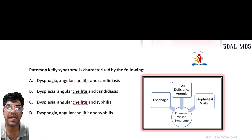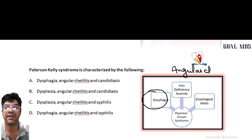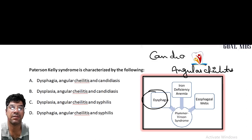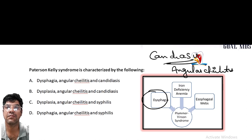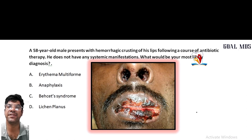Paterson-Kelly syndrome is also known as Plummer-Vinson syndrome. Its features include dysphagia (difficulty in swallowing), angular cheilitis, and candidiasis. The triad is dysphagia, iron deficiency, and atrophic glossitis.